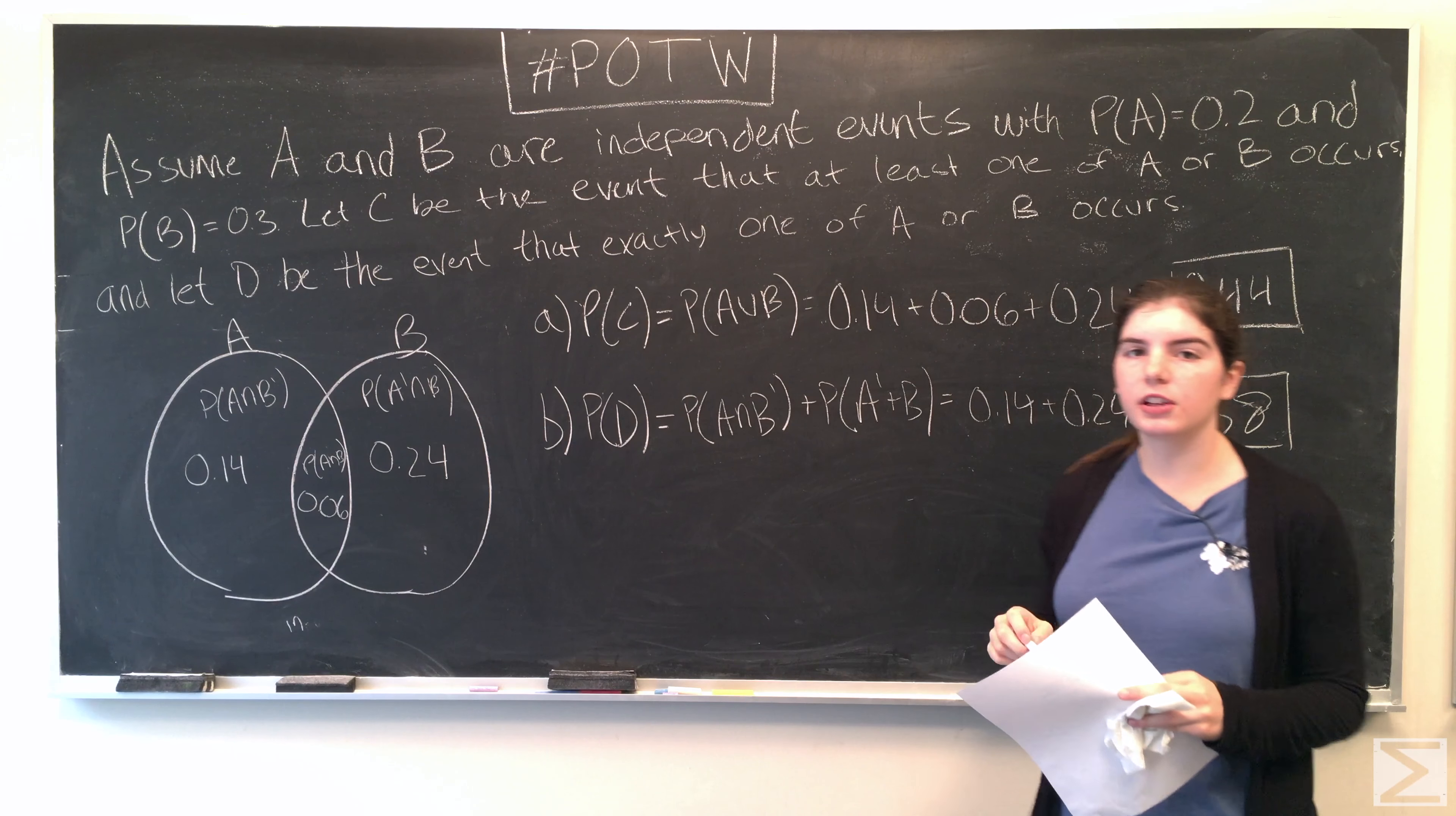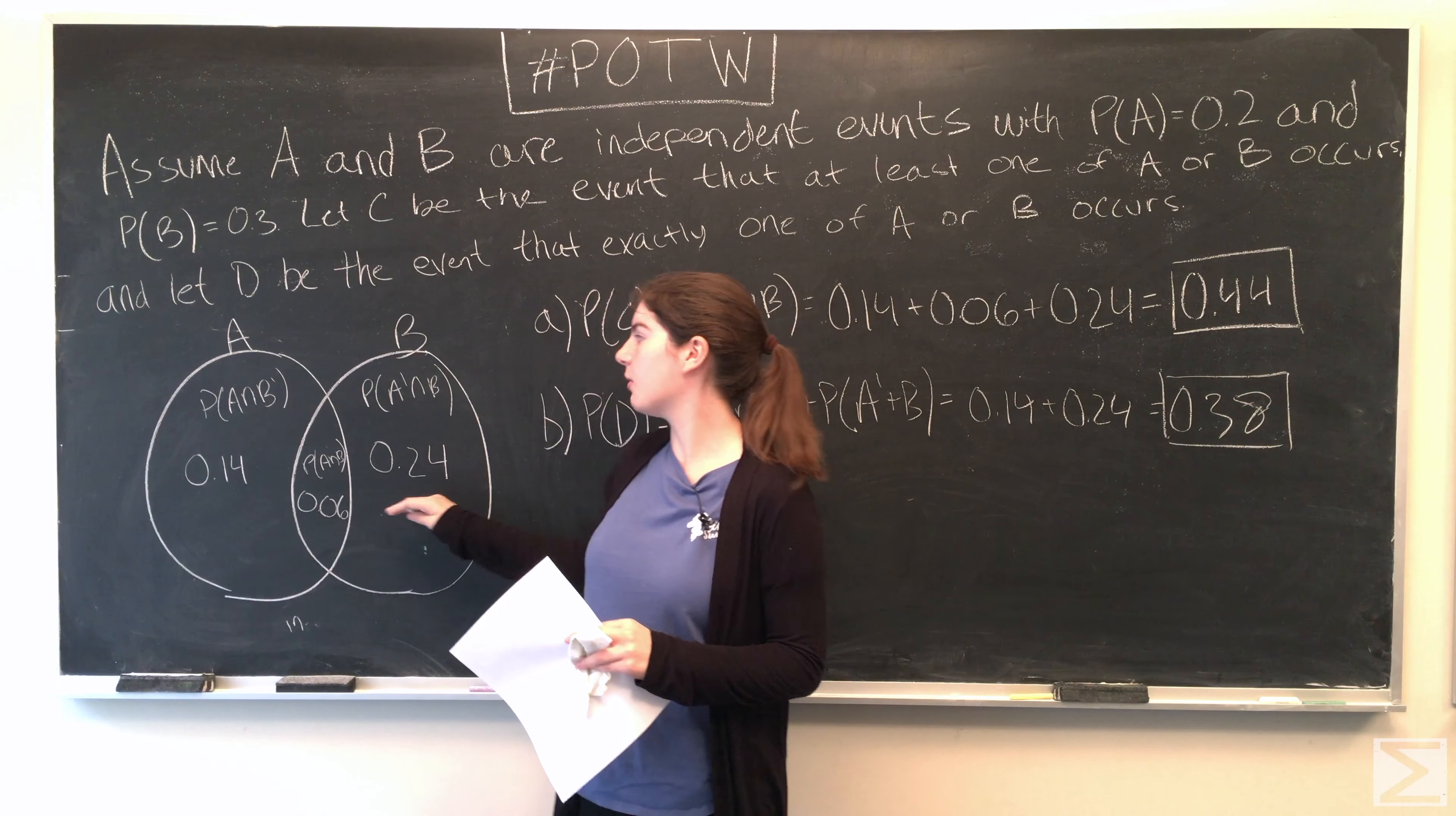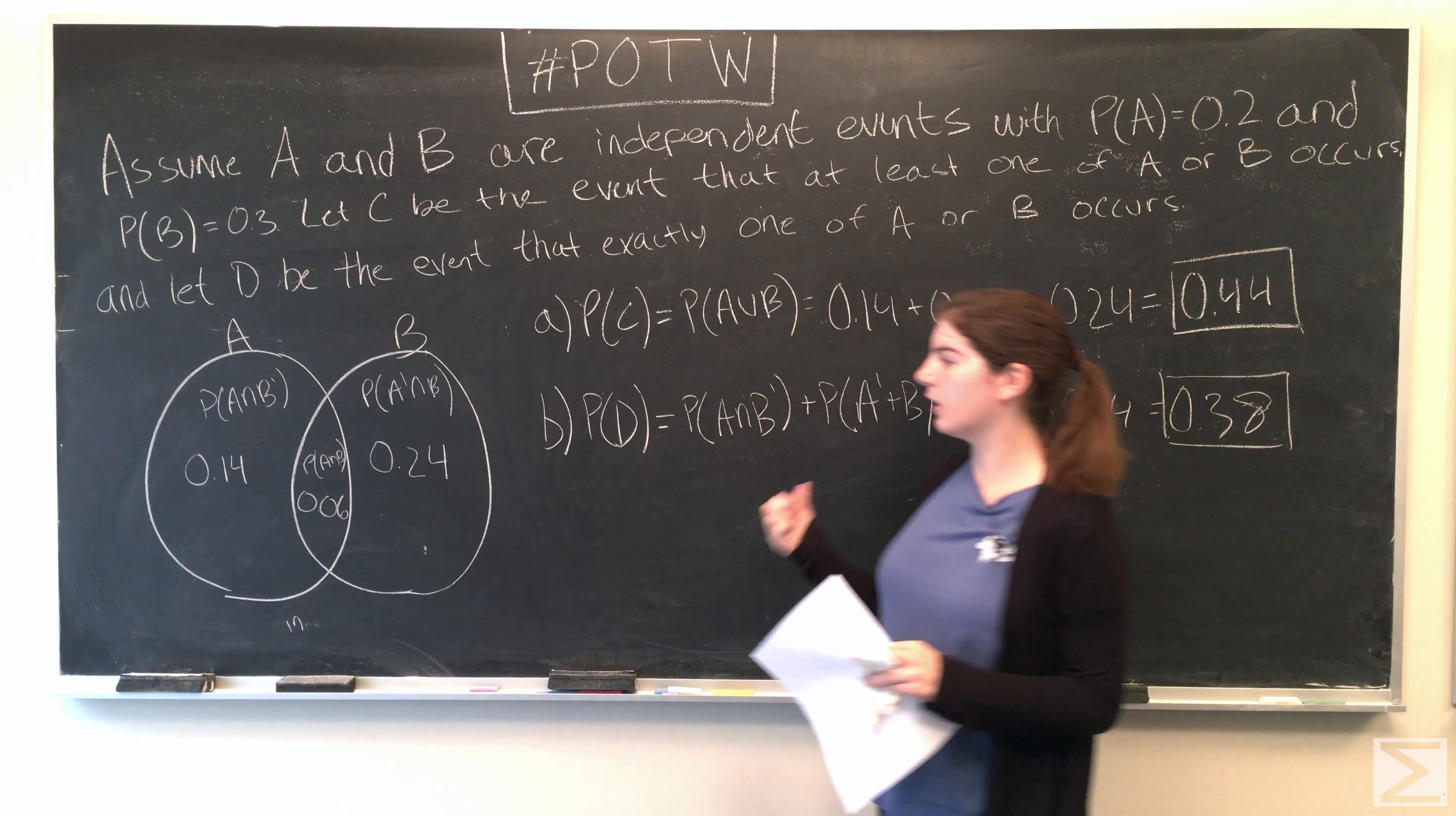And the probability of D is that exactly one of A or B occurs. So it's that A occurs and B doesn't, or that B occurs and A doesn't. So we just add up 0.14 and 0.24 to get 0.38.